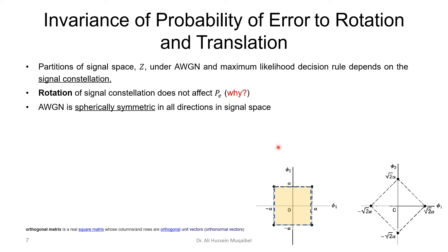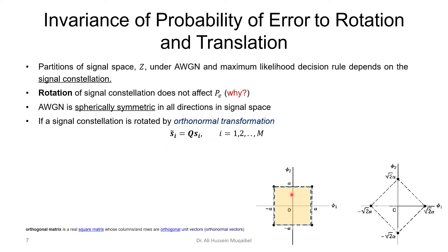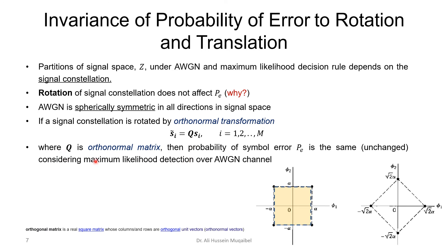In signal space — whether 2D or 3D — if a signal constellation is rotated by an orthonormal transformation, equivalent to multiplying by a matrix Q, and if Q is an orthonormal matrix, then the probability of error is unchanged. This holds under the assumptions of maximum likelihood detection and additive white Gaussian noise channel. An orthogonal matrix is a real square matrix whose columns and rows are orthogonal. The key takeaway is that there is invariance of probability of error due to rotation.